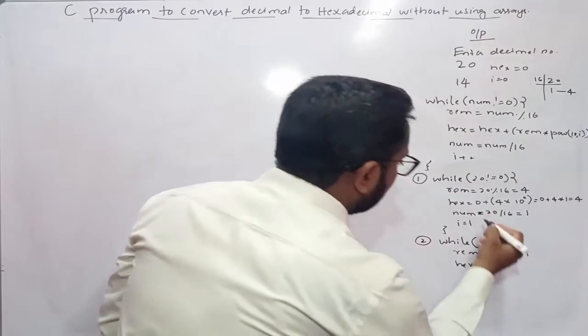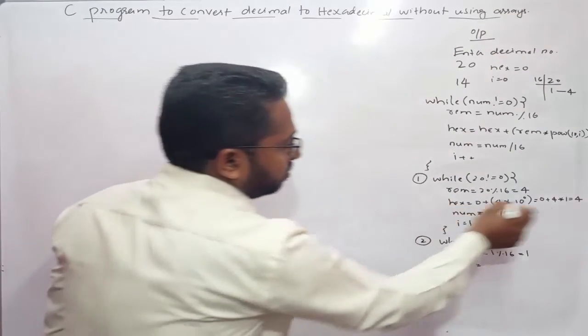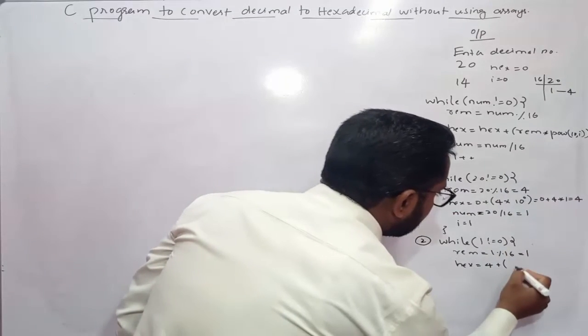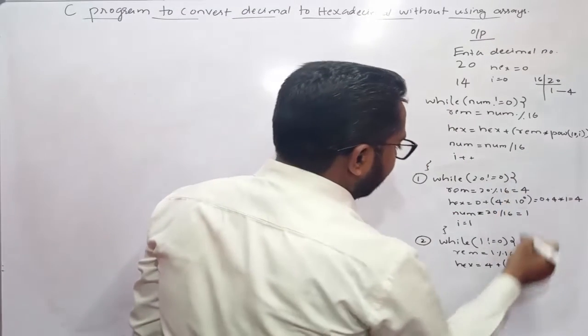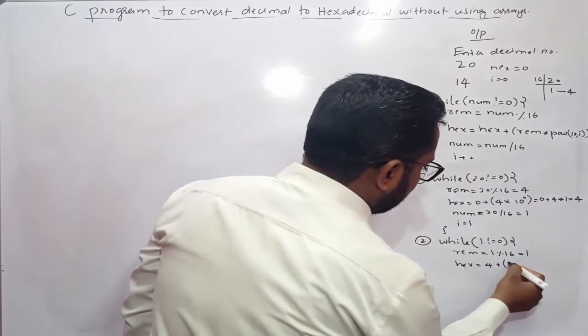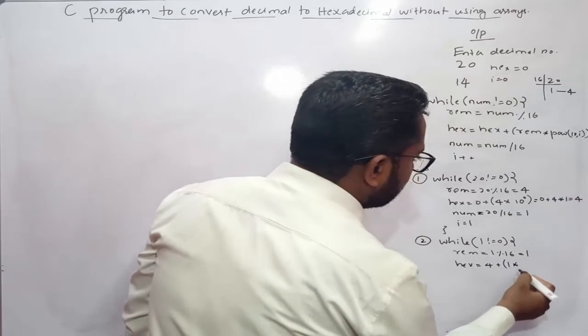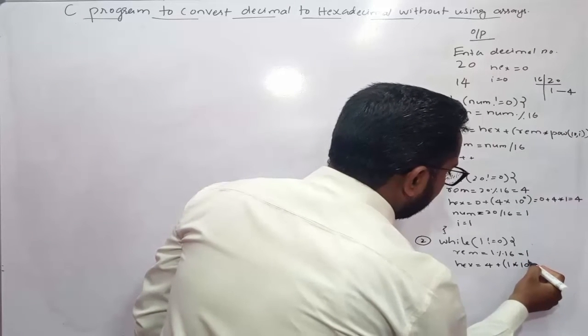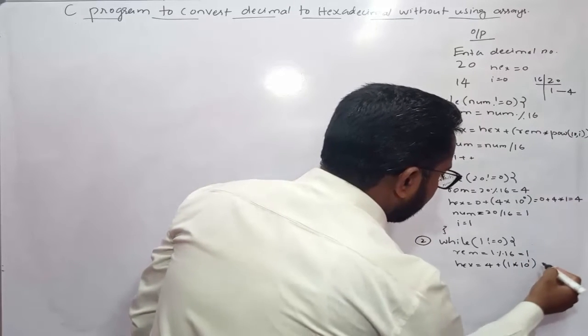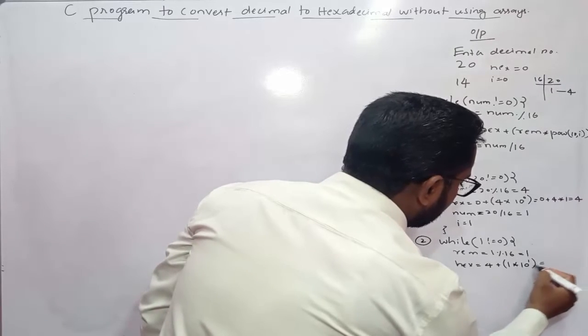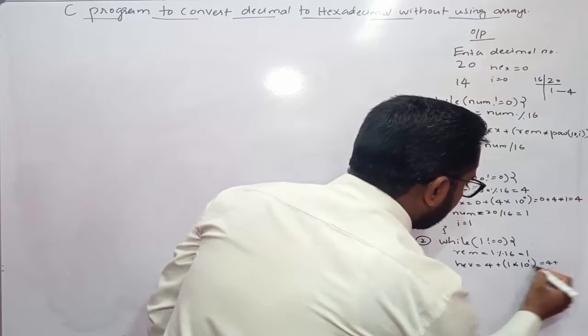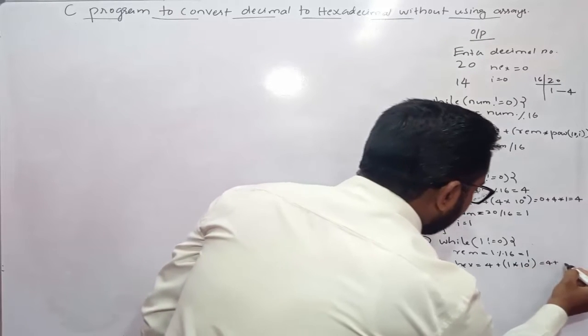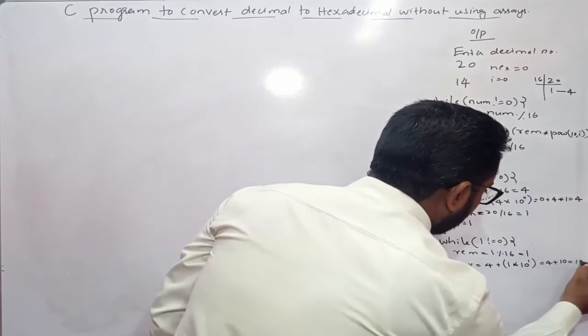In the earlier iteration hex value was 4, so 4 plus remainder which is 1, times 10 raised to i where i value is 1. So 4 plus 10 raised to 1 is 10, 10 times 1 is 10, so 4 plus 10 equals 14.